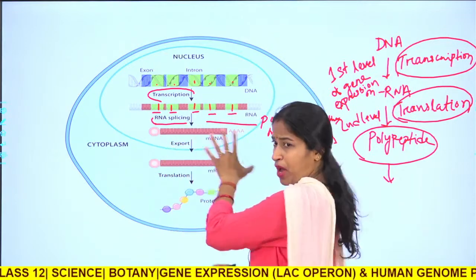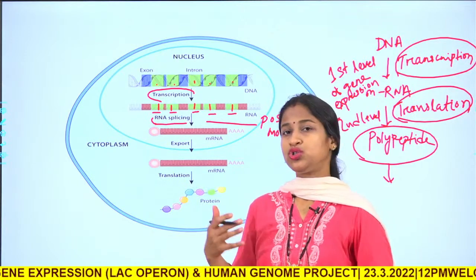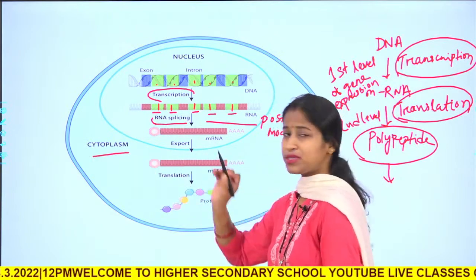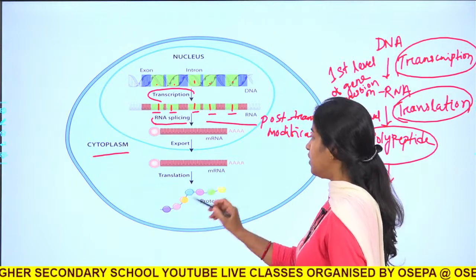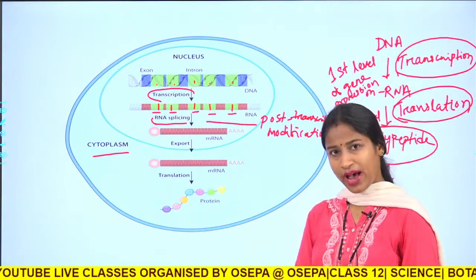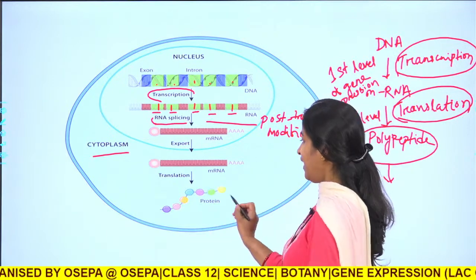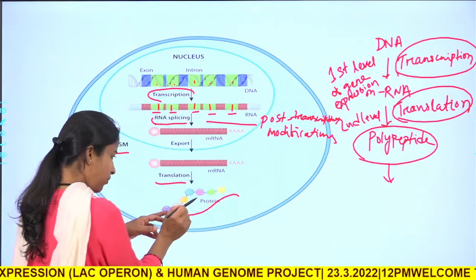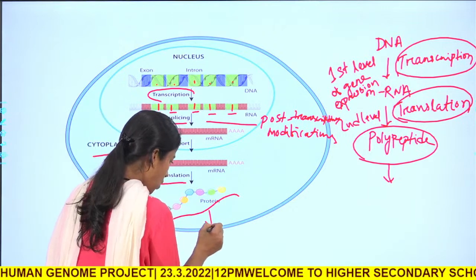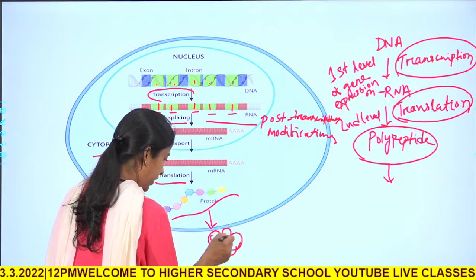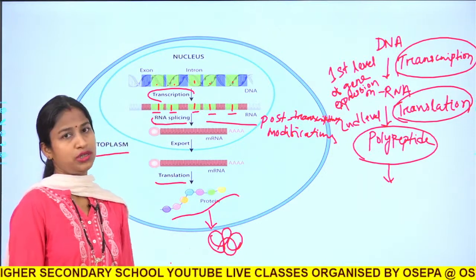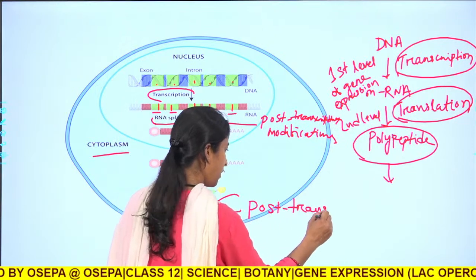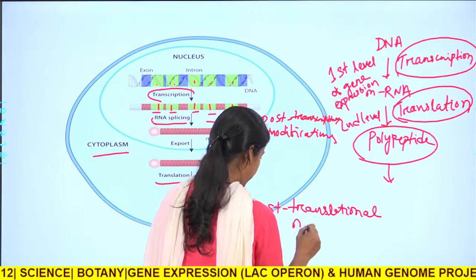Once the mRNA is ready, it must come out of the nucleus and reach the cytoplasm. With the help of ribosomes and tRNA, the mRNA undergoes translation — the process of protein synthesis we have already discussed. After translation, the protein is just a string of polypeptide, but it will undergo a folding process into a structural protein, functional protein, or enzyme. This step is known as post-translational modification.